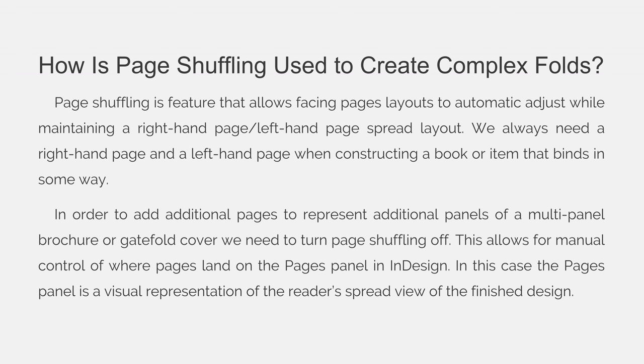Page shuffling is a feature that allows facing page layouts to automatically adjust while maintaining a right-hand page and a left-hand page. We always need a right-hand page and a left-hand page when constructing a book or item that binds. In order to add additional pages to represent additional panels of a multi-panel brochure or gatefold cover, we need to turn page shuffling off.